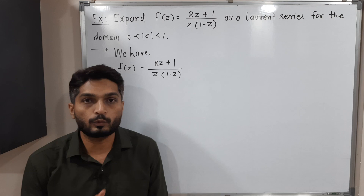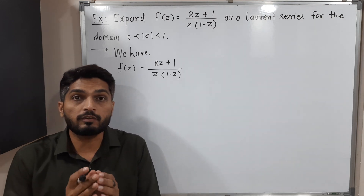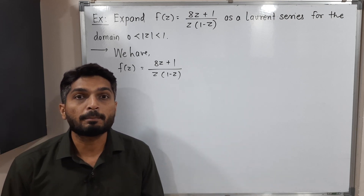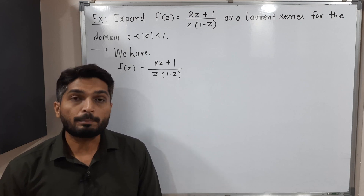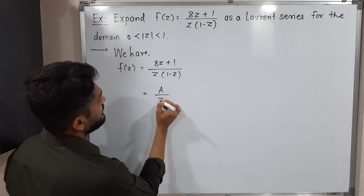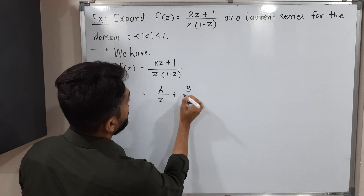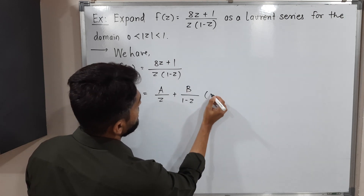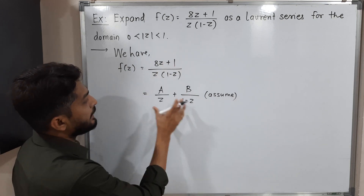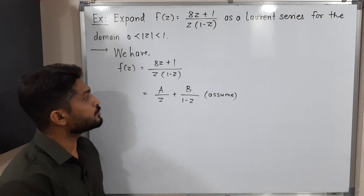We have to find the Laurent expansion. In the denominator we have two terms: z and (1 - z), so our first task is to separate them using partial fractions. We assume f(z) = A/z + B/(1 - z), where A and B are constants.